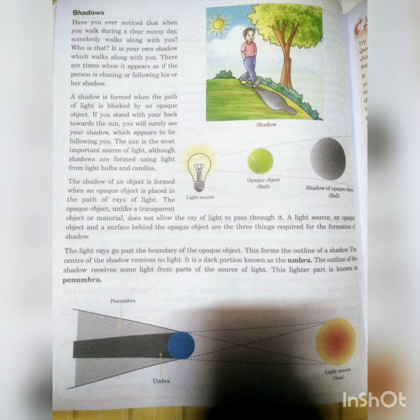A light source, an opaque object, and a surface behind the opaque object are the three things required to form a shadow. Teen cheezon ki zaroorat hoti hai shadow banne ke liye: ek light source chahiye, opaque object chahiye, aur jis surface par shadow banega wo chahiye.